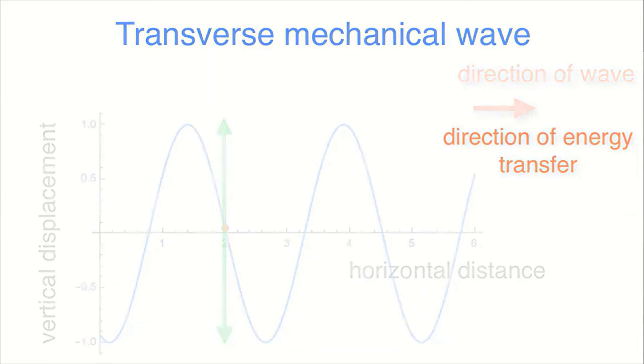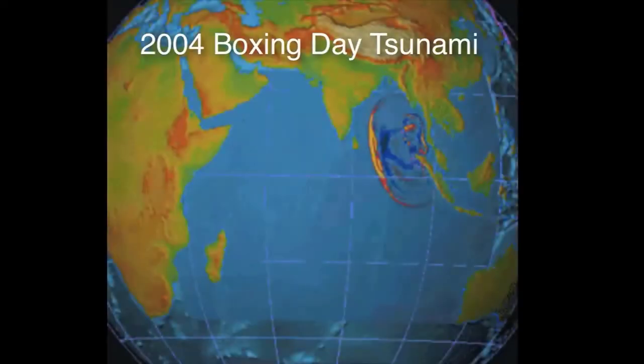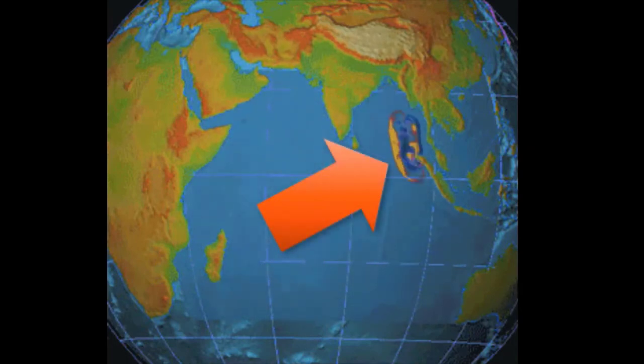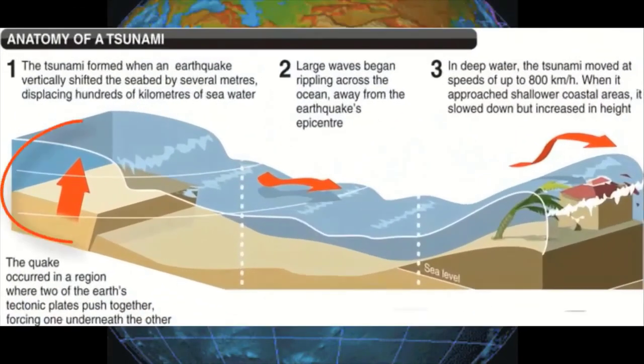A striking example of water waves carrying energy is the 2004 Boxing Day tsunami that killed between 240,000 and 280,000 people living near the coasts of the Indian Ocean. The initial disturbance was an undersea earthquake with a significant vertical displacement of the seabed. This earthquake released an immense amount of energy.